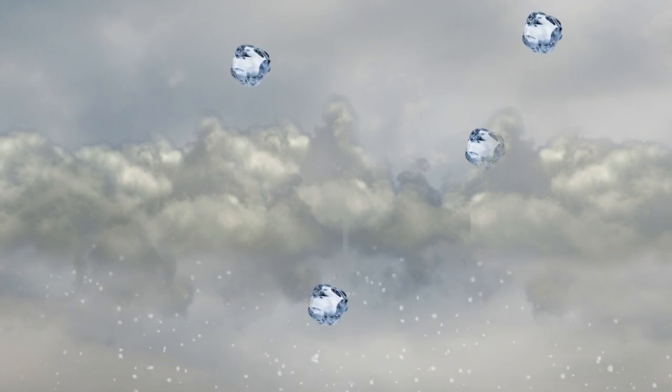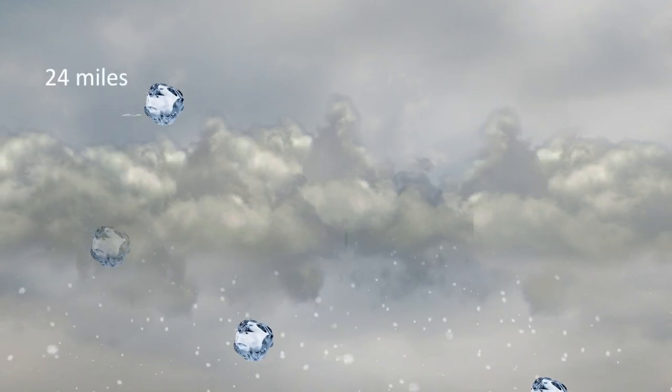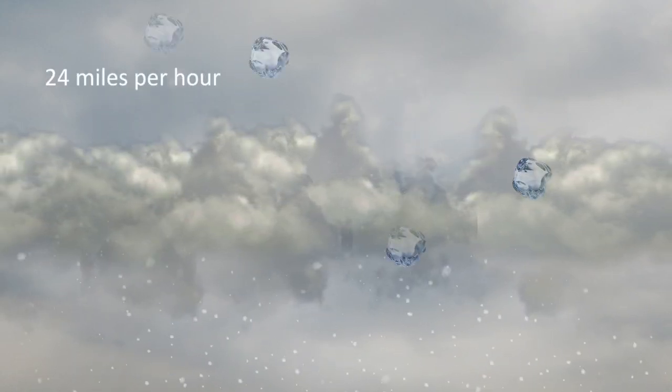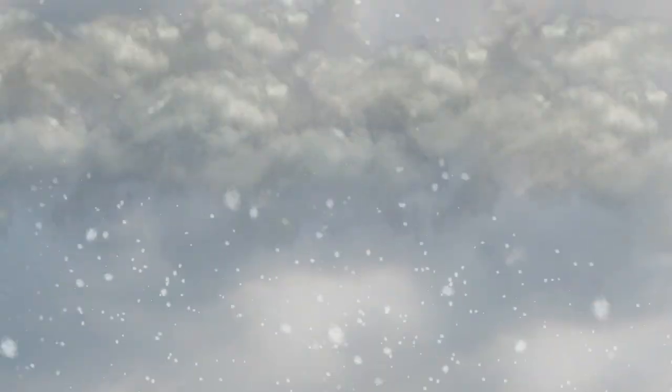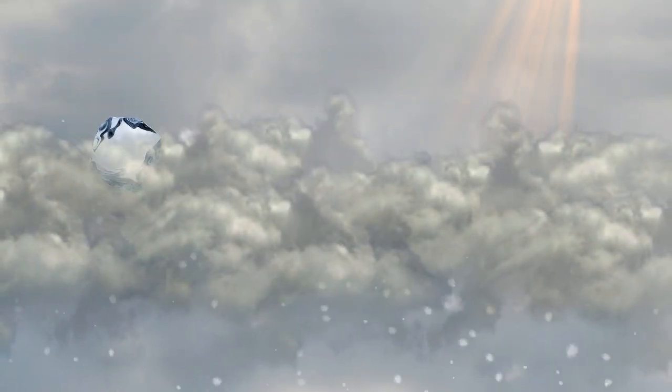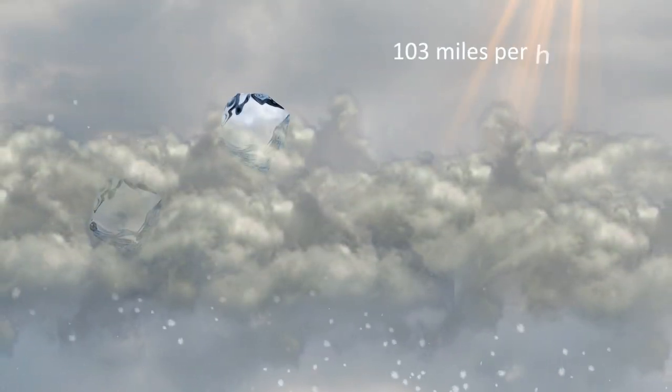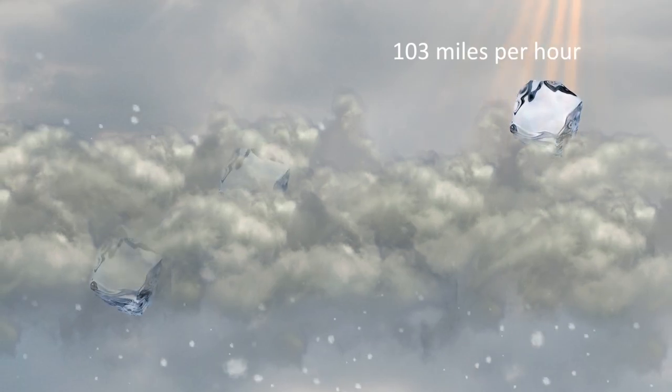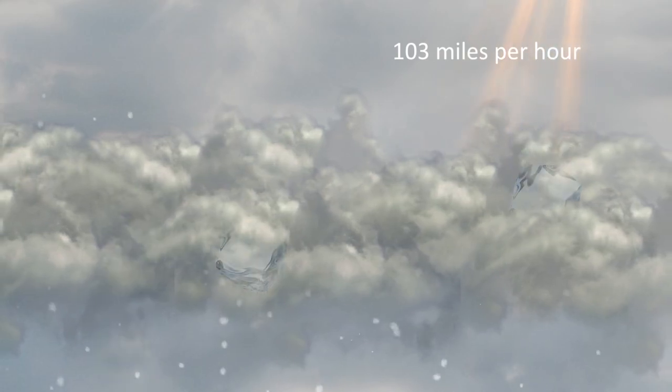Small hail does not take strong updrafts to be formed. For example, pea-sized hail can form with updrafts of only 24 miles per hour. Very large hailstones require much stronger winds. Softball-sized hail would need an updraft of 103 miles per hour.